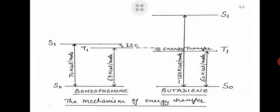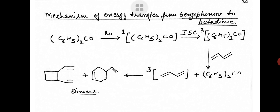When the benzophenone triplet collides with butadiene, a triplet energy transfer occurs, as clearly shown in the figure. Benzophenone absorbs light at about 366 nm and is excited to its S1 state. Since the energy gap between S1 and T1 is only 5 kcal/mol, there is very efficient inter-system crossing which populates the T1 state. When the benzophenone triplet collides with butadiene, triplet energy transfer occurs resulting in the formation of the triplet state of butadiene, which reacts to produce dimers.